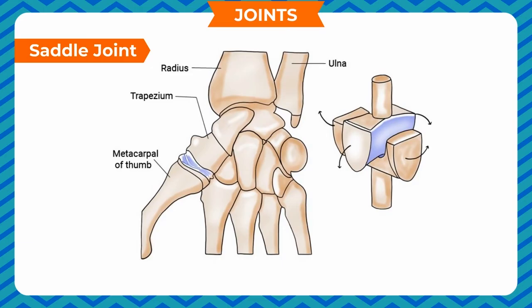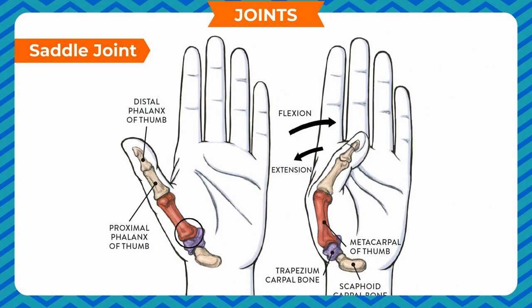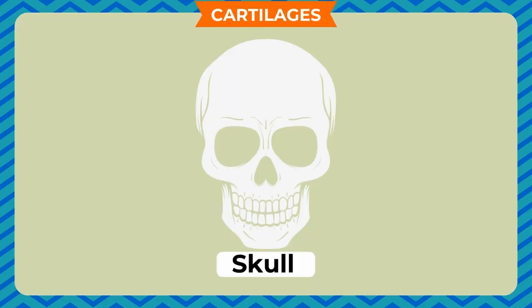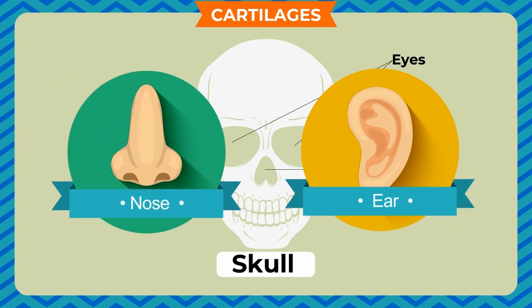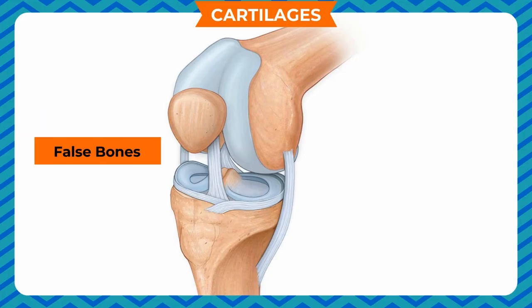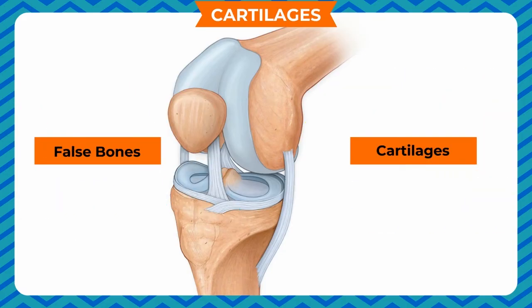Saddle joint: It is an imperfect ball and socket joint in which one bone is movable on another fixed bone in many directions. Location: the thumb joint — the joint between the first metacarpal and carpal. Cartilages: The nose and ears are made up of flexible tissue called cartilage. Cartilage is soft and elastic tissue which makes up our ears and nose, and it also connects two bones together in a joint.